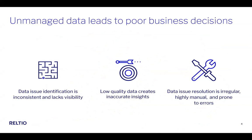When we don't manage, we don't govern that data. Things we see here at RealTO are that data issue identification is really inconsistent and lacks visibility, which makes it really hard to actually execute on your data governance strategy. Low quality data impacts the business in multiple aspects, both operationally and analytically. When you're not able to create the right insights, you make bad decisions. The resolution of data issues tends to be very irregular and highly manual as well.